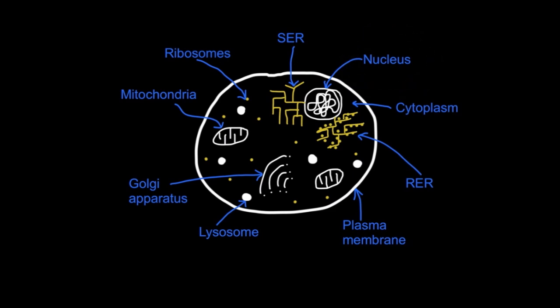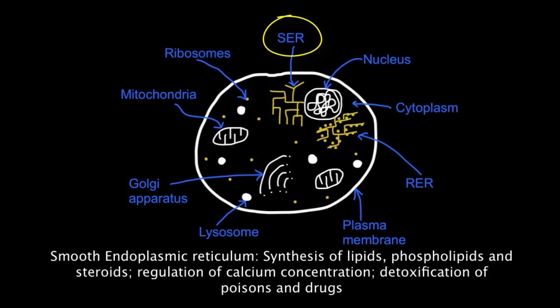A eukaryotic cell also has smooth and rough endoplasmic reticulum. The rough endoplasmic reticulum has ribosomes attached to it. The smooth endoplasmic reticulum is used for synthesis of lipids, phospholipids, and steroids, regulation of calcium concentration, and detoxification of poisons and drugs.